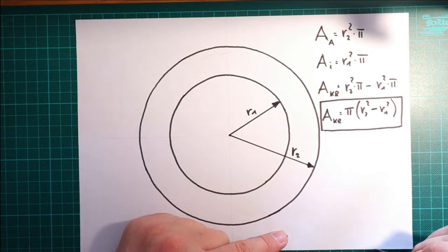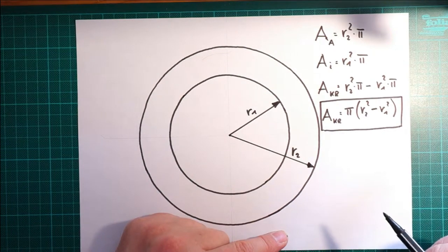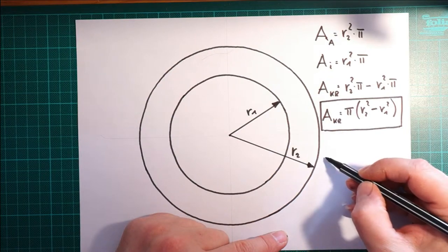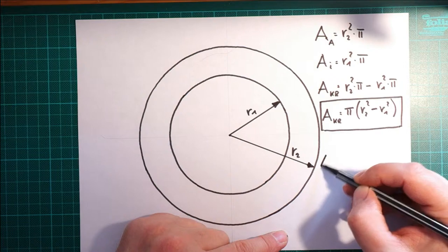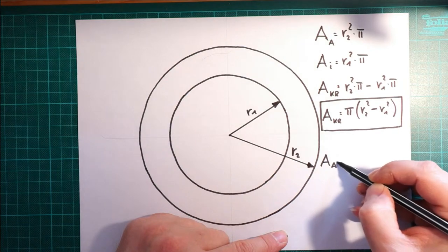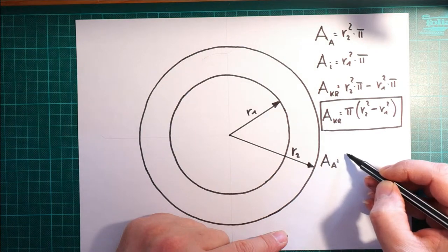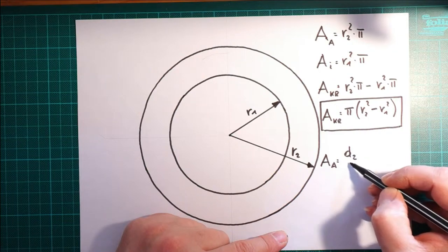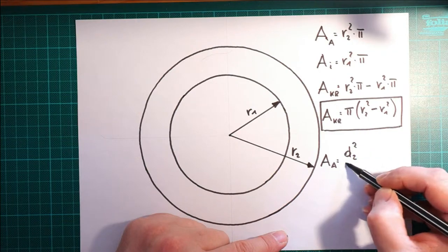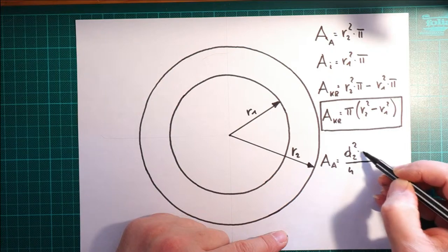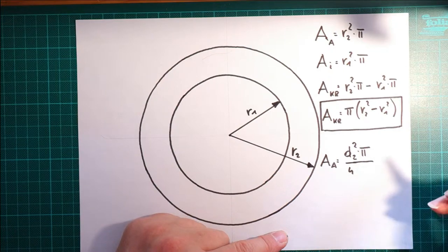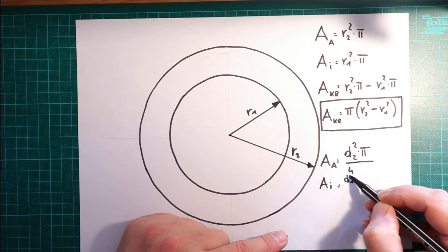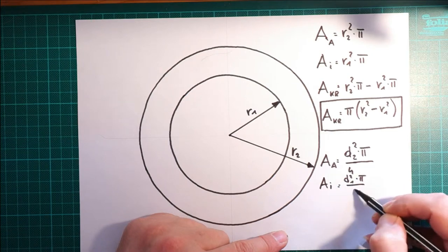Jetzt könnte man natürlich wieder überlegen, wie schaut denn das aus, wenn ich da den Durchmesser gegeben habe. Auch nicht so schwer wie vorher. D2² ¼ mal Pi. Der innere Kreis. D1² mal Pi ¼.